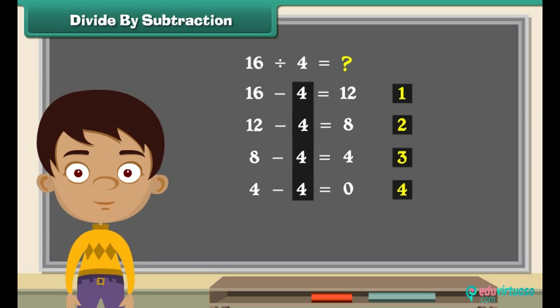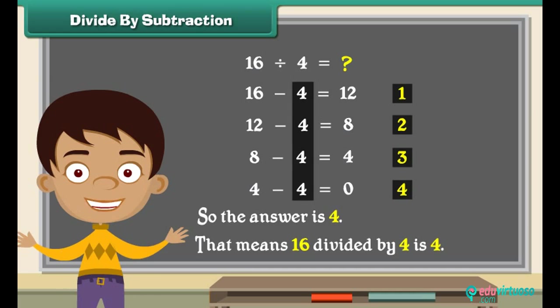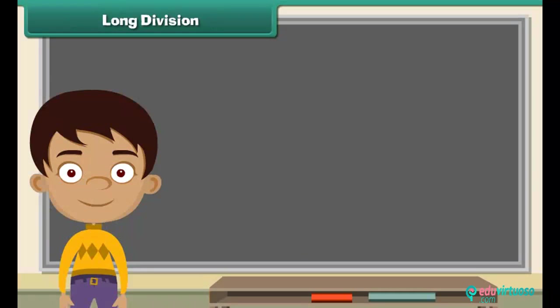Four fours have been subtracted, so the answer is four. That means sixteen divided by four is four.